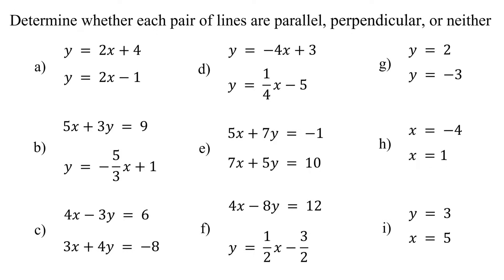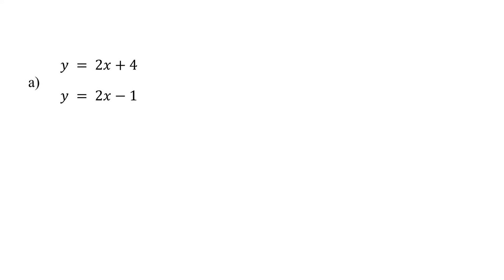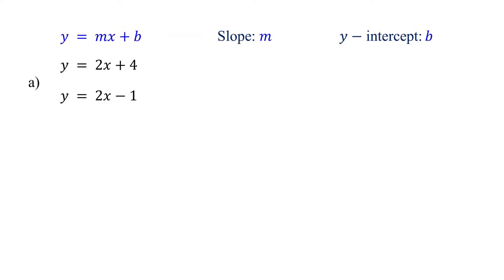Let's start by focusing on parallel lines. The first step is to identify their slopes and y-intercepts. In this example, both equations are in slope-intercept form. In this form, the coefficient of x is the slope and the constant term is the y-intercept. So in the first equation, the slope is 2 and the y-intercept is 4.